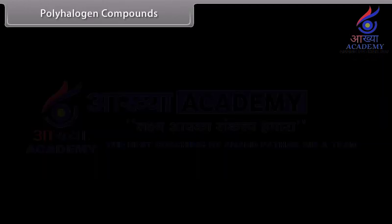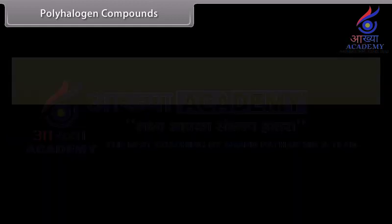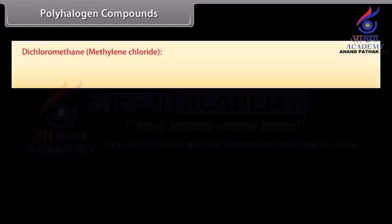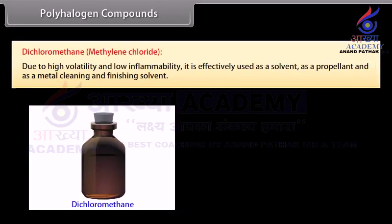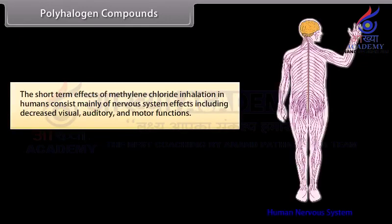Polyhalogen compounds are carbon compounds containing more than one halogen atom. Dichloromethane, or methylene chloride: due to high volatility and low inflammability, it is effectively used as a solvent, as a propellant, and as a metal cleaning and finishing solvent. The short-term effects of methylene chloride inhalation in humans consist mainly of nervous system effects including decreased visual, auditory, and motor functions.